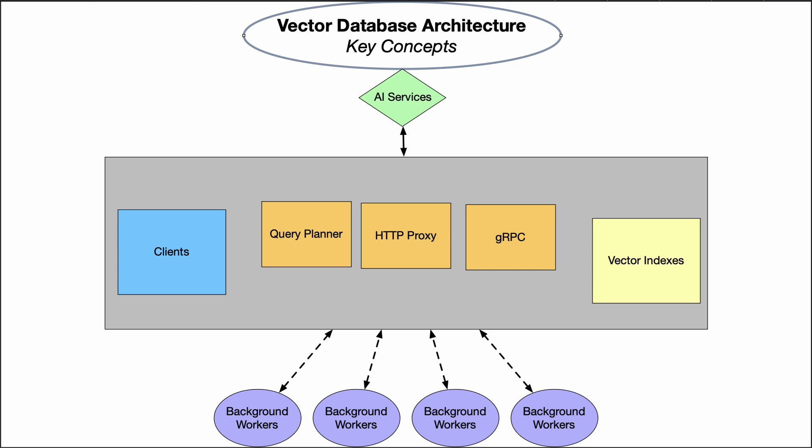These clients then connect to an HTTP proxy layer that handles request routing. That proxy would forward the API request to the gRPC service, and that gRPC service is the core API endpoint that exposes the vector database system's capabilities over RPC. It handles things like create, search, insert, etc.